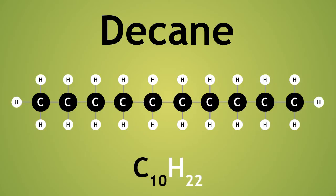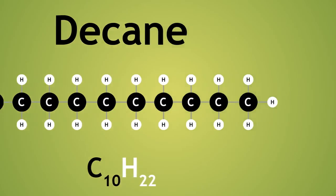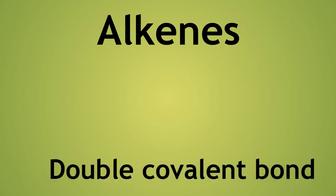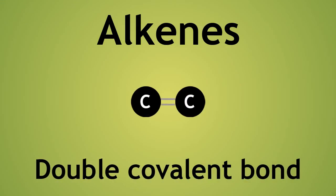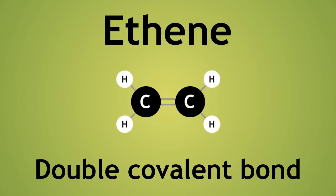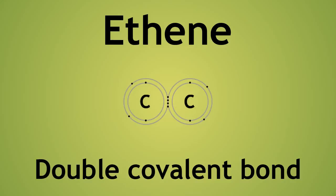Let us look now at the homologous series of the alkenes. These are unsaturated and so contain a double covalent bond between 2 carbon atoms. Here is ethene. Since there is a double bond, there are now 2 shared pairs of electrons between the 2 carbon atoms. Each carbon atom now has only 2 electrons, which covalently bond with a total of 4 hydrogen atoms, 2 on each carbon, to complete the ethene molecule.